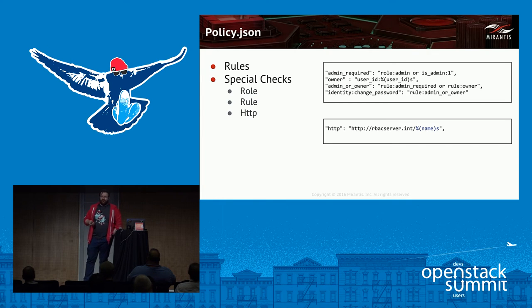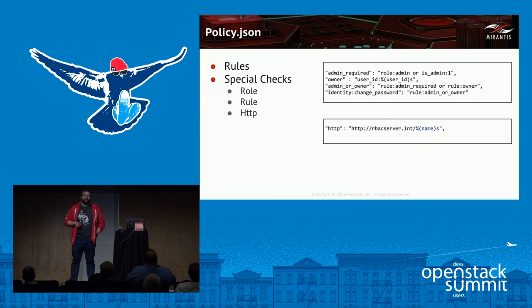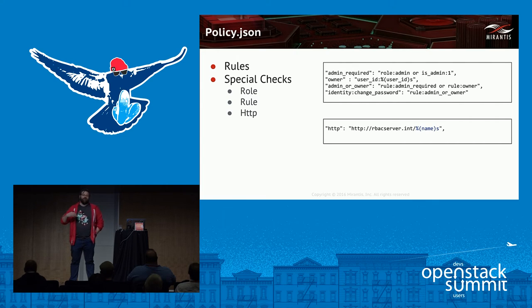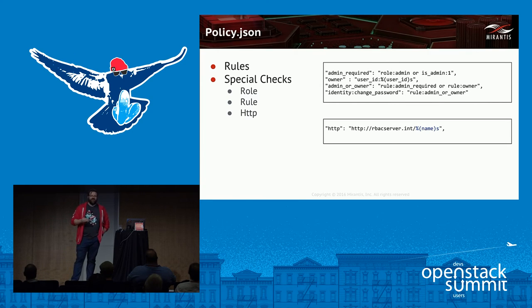There are a number of special checks available in policy.json. A newer one is an HTTP call — you can actually add a rule where you pass certain information across using an HTTP call and get an answer back. I spoke earlier about speed — can you imagine a thousand API calls that have to make a thousand HTTP calls a second to some arbitrary HTTP server? You're now starting to add not milliseconds but seconds into your call cycle.